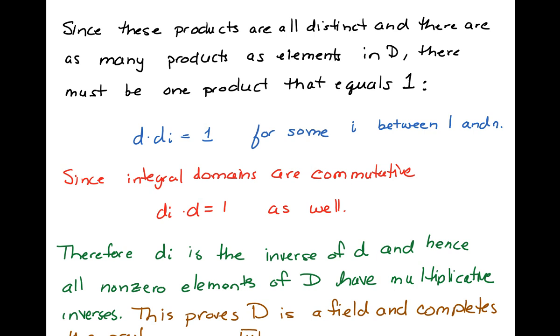This proves that D is a field because the only thing missing from integral domains to step up to a field is that we have multiplicative inverses. So this just proved that we have multiplicative inverses, and we're done.